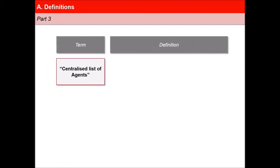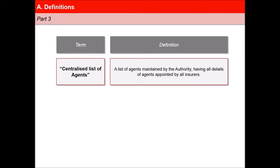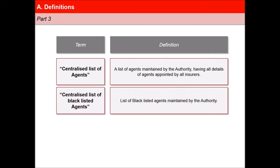'Centralized List of Agents' means a list of agents maintained by the authority which contains all details of agents appointed by all insurers. Eighth, 'Centralized List of Blacklisted Agents' means a list of agents maintained by the authority whose appointment is cancelled or suspended by a designated official of the insurer on grounds of violation of Code of Conduct and/or fraud.